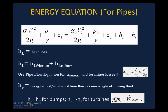In front of you here we have the energy equation for pipes. On the left side is the total energy at section one, which is upstream of section two. I have the velocity head — alpha one is a correction factor because we're using the mean velocity at section one to represent the kinetic energy at that location. P1 over gamma is the pressure head, and Z1 is the potential energy head due to elevation. Downstream, we have the total energy at section two, plus the head loss, minus the energy added or subtracted from the flow per unit weight of flowing fluid.